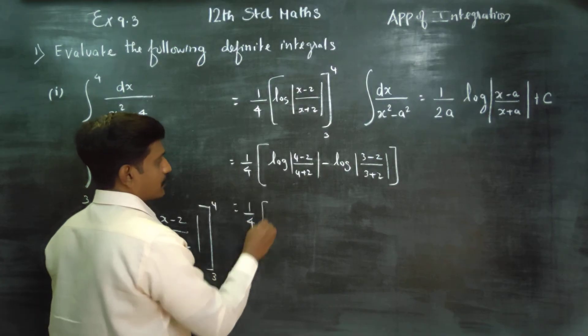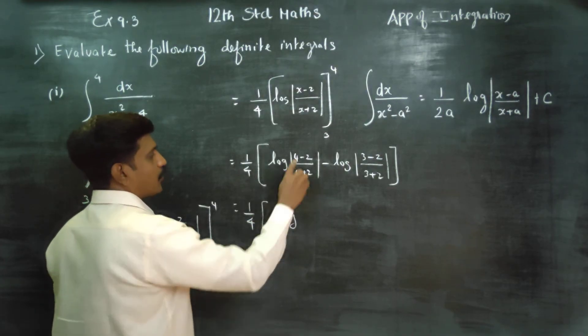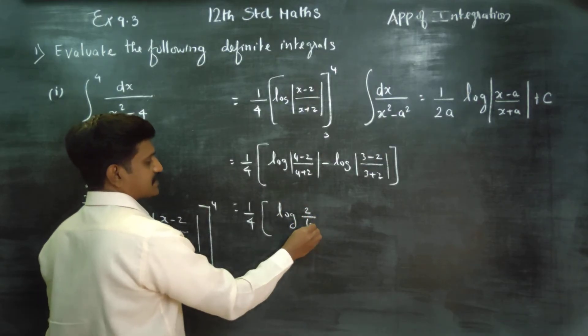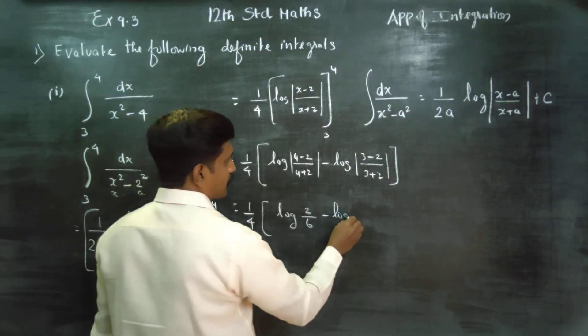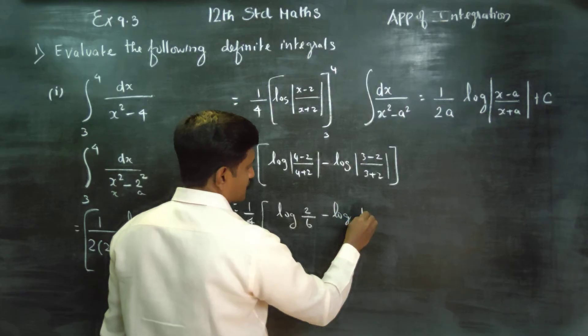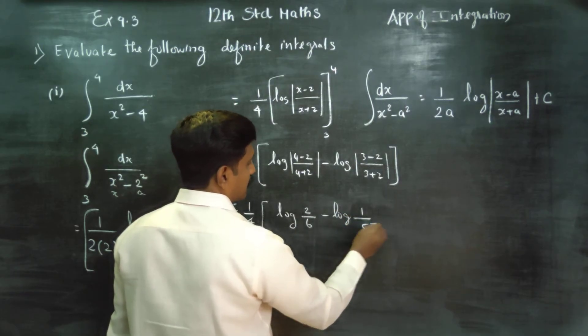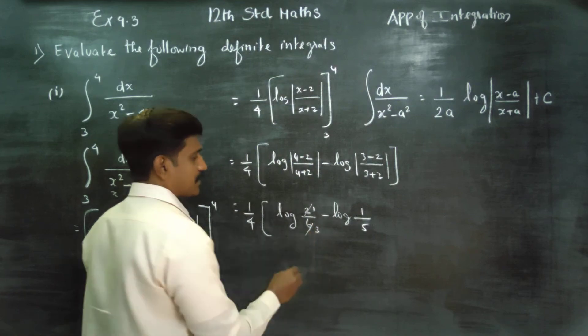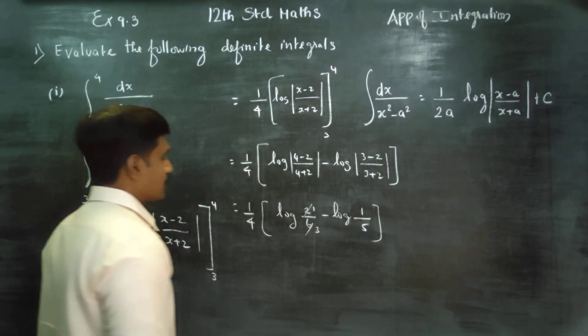Then 1 by 4, logarithm of positive value, 4 minus 2 is 2, 4 plus 2 is 6, minus logarithm of positive value, 3 minus 2 is 1, 3 plus 2 is 5. This cancels and becomes 1 by 3.